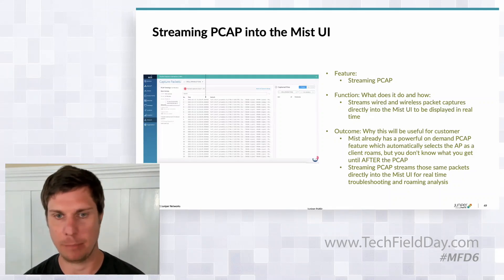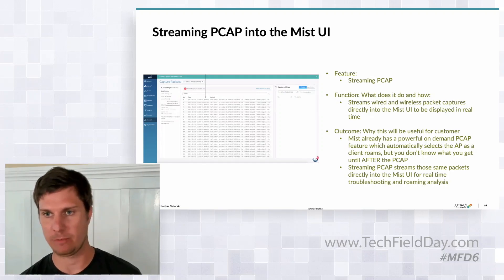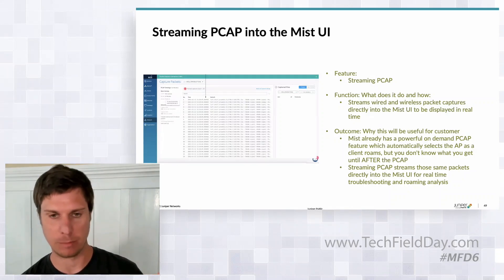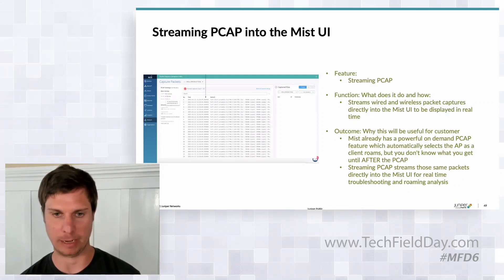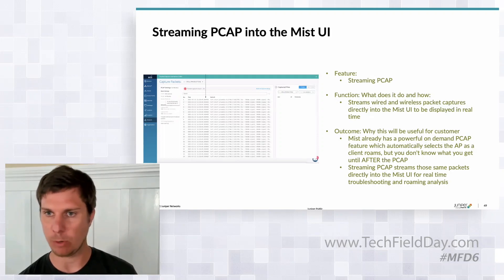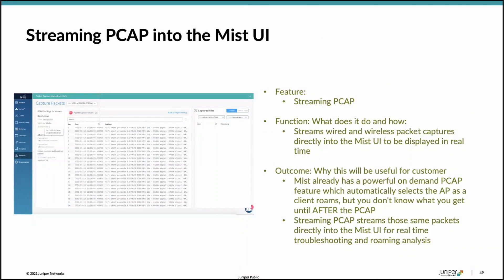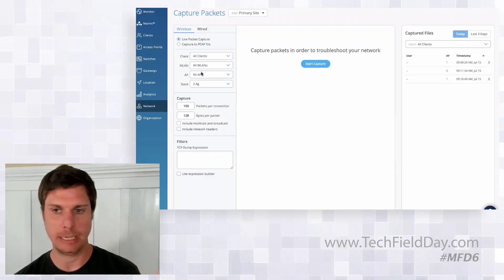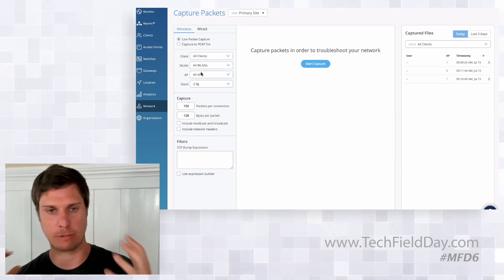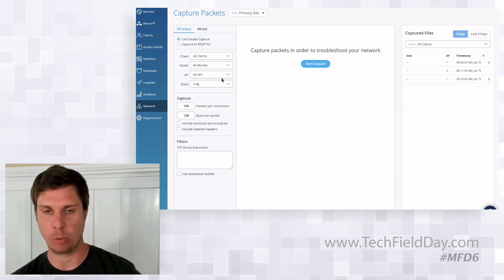If you're familiar with MIST, we have dynamic packet capture — the AP automatically gathers a packet capture when there's a connection problem, so you don't have to go back in time. However, there are times when you may want to do a manual packet capture, and we've had that capability for years. What we're adding now is the ability to stream that PCAP directly into the MIST UI, rather than starting a capture, hoping you get the right frames, and then downloading it.